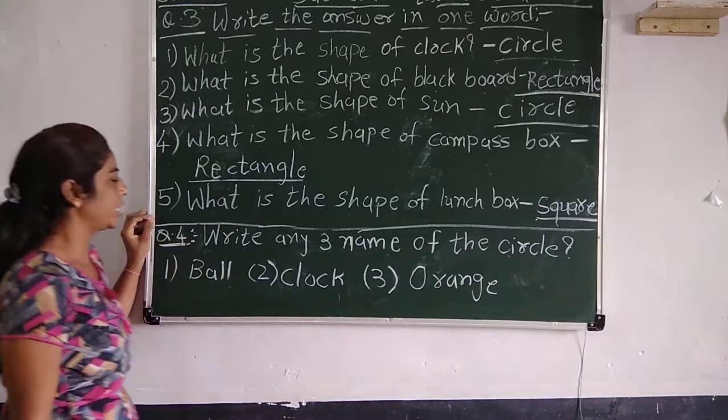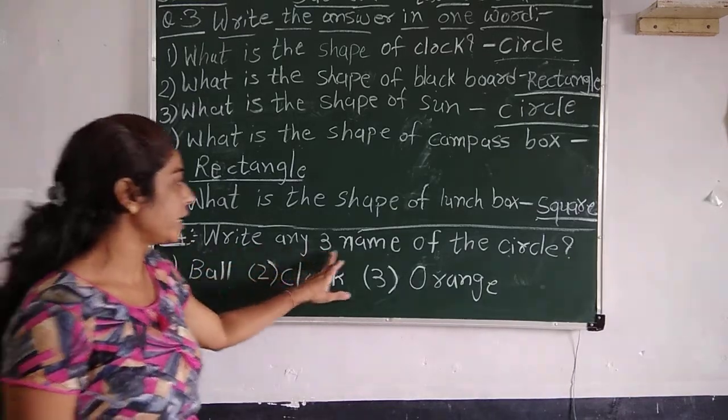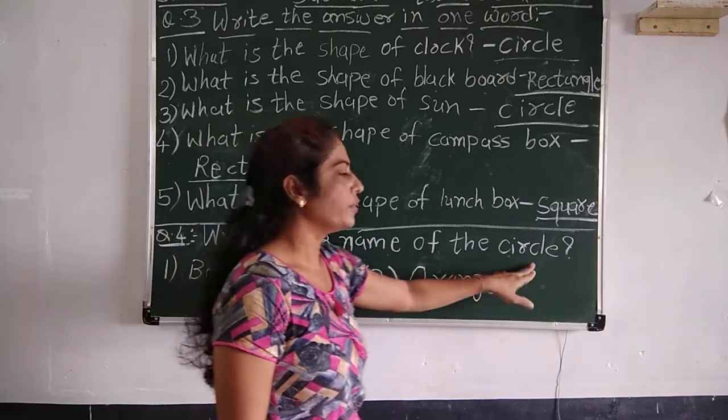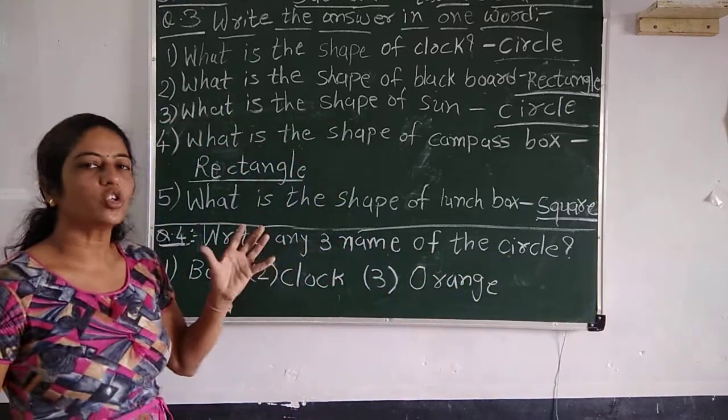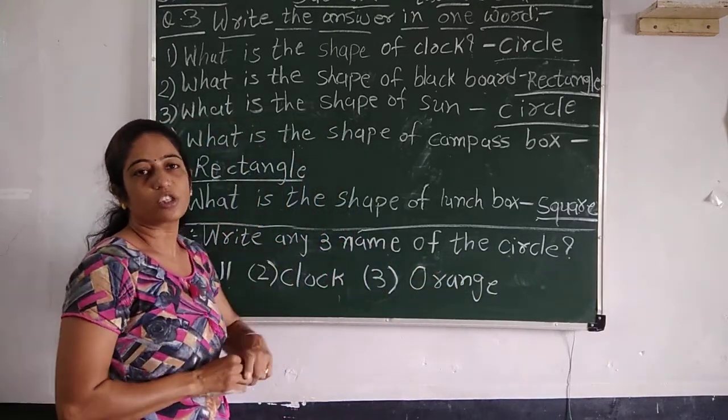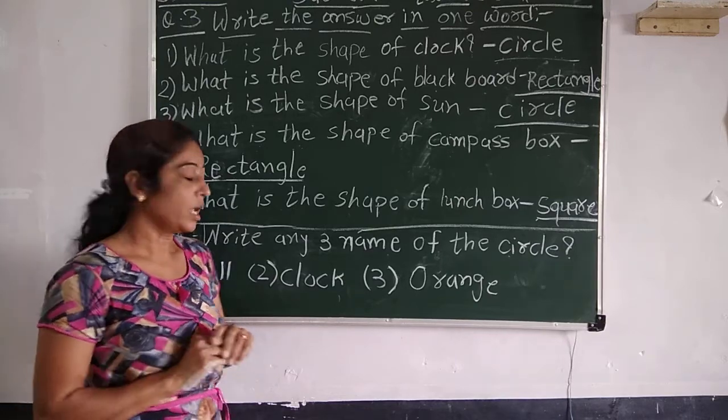Then the fourth section is write three objects. The circle, the circle is the three objects.